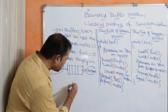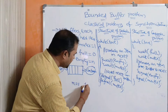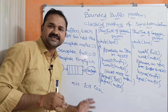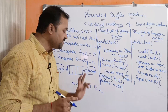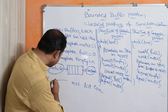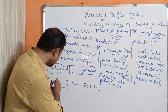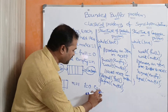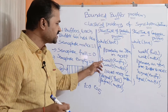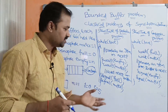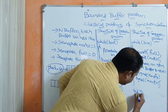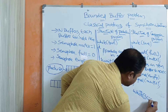Let us check our code. The initial value of mutex is 1, full is 0, and empty is n. Mutex is a binary semaphore, while full and empty are counting semaphores. Let n equal 5, so we have 5 buffers: 1, 2, 3, 4, 5. Initially empty value is 5. Let us execute the producer process first.